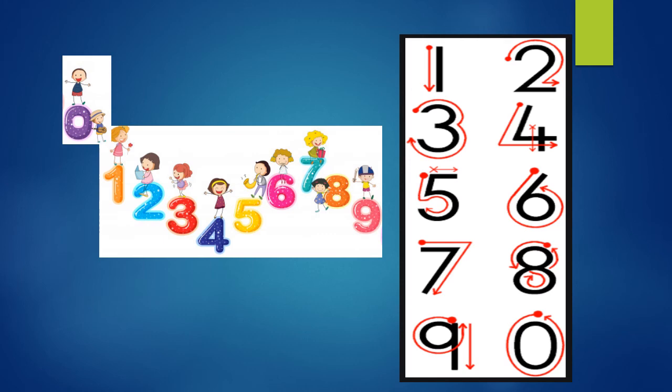0, 1, 2, 3, 4, 5, 6, 7, 8, 9. On the other side you can see numbers 1 to 9 with their correct formation.